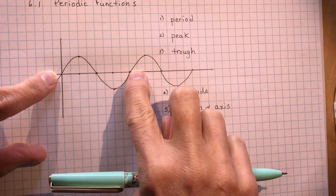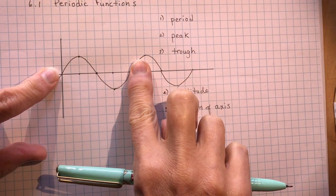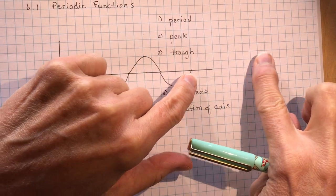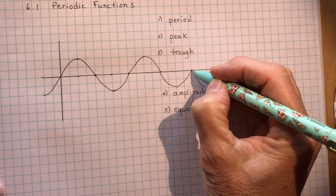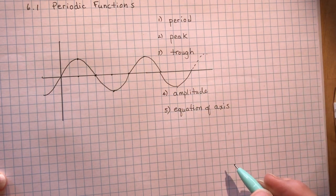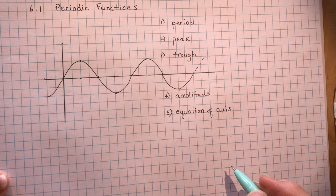You can see how it starts to repeat once I go here. So if I took this and I cut and pasted it, I could paste it over and over and over again. So this function could just keep going and going and going. So that's what they mean by periodic functions.